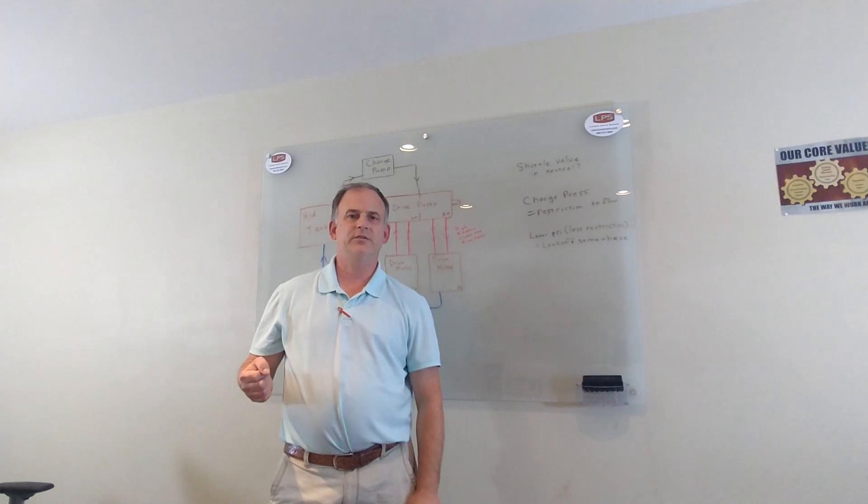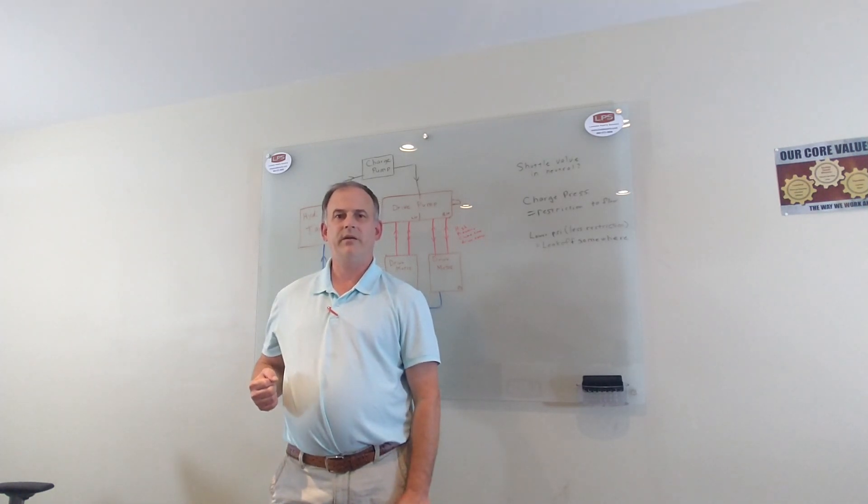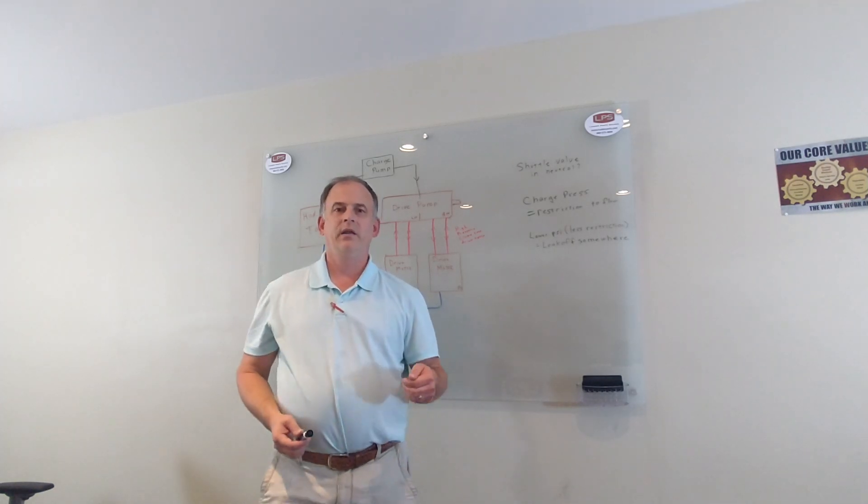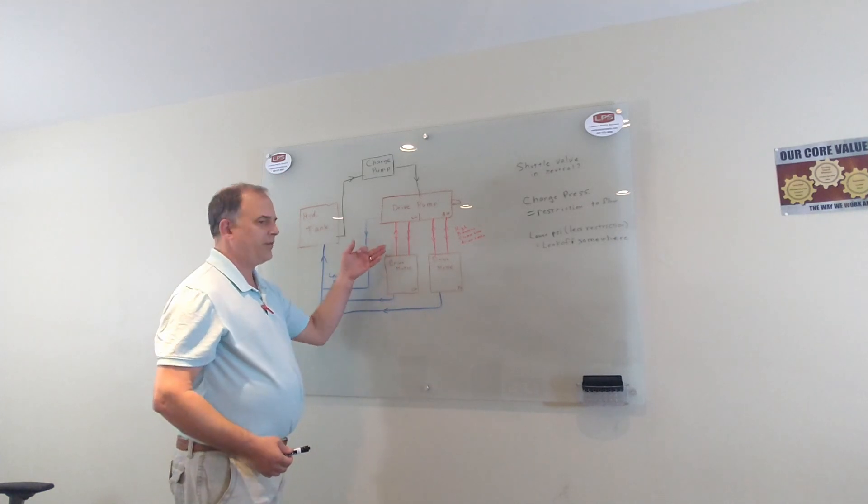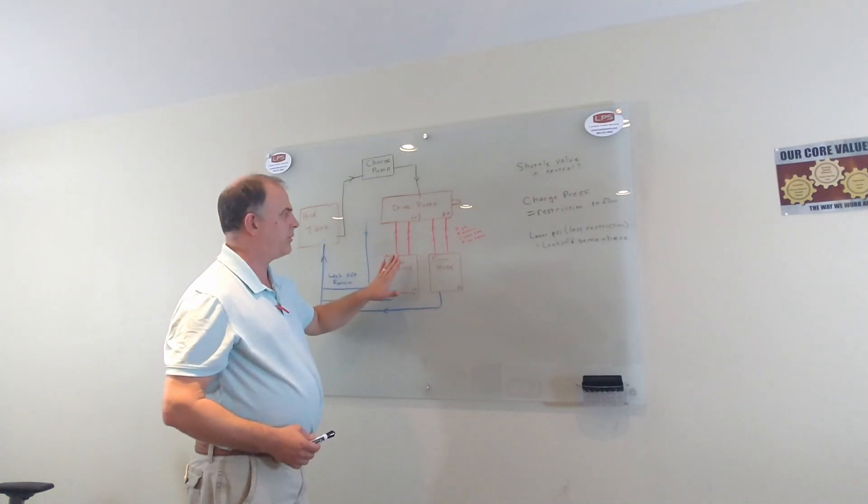That's your clue. Hey, when you push the lever forward on the right side, the charge pressure drops. When you pull it in reverse on the right side and the charge pressure drops at the same point, but it doesn't do it on the left side, then you know there's a problem on the right side. You still don't know if it's a pump or a motor problem, but you know it's a problem.